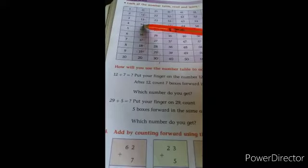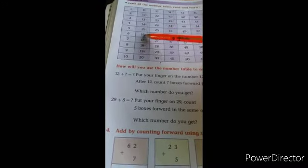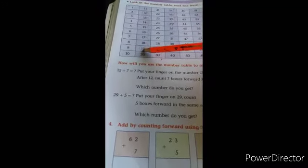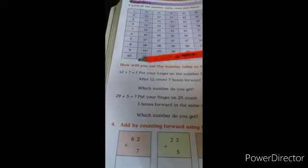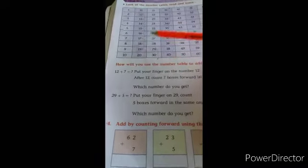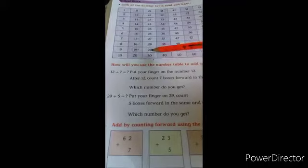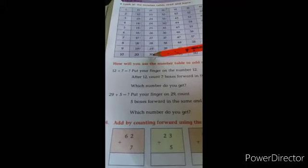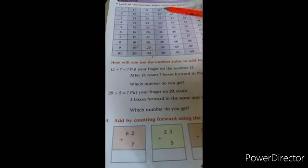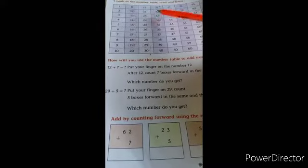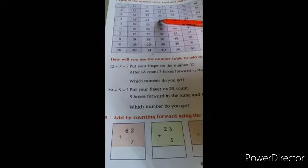So here answer become 19. Now 29 plus 5. Search 29 number here children. Go front 5: 1, 2, 3, 4 and 5. 34 answer.